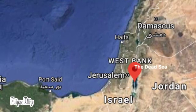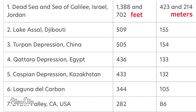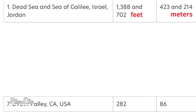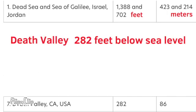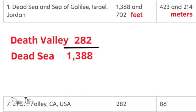The Dead Sea is located east of the Mediterranean Sea in Israel and Jordan. The Dead Sea holds the record for the lowest point on earth. Death Valley in California is 282 feet below sea level. The elevation of the Dead Sea is 1,388 feet below sea level. Let's compare the two elevations.